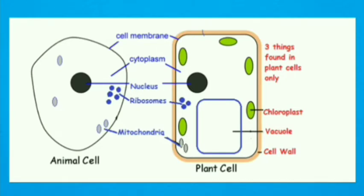There are also certain features that are found in plant cells but not in animal cells, such as a cell wall and large central vacuole.